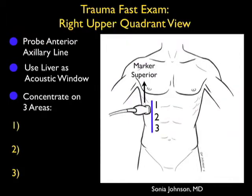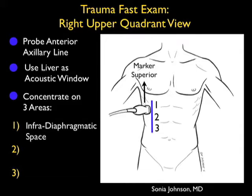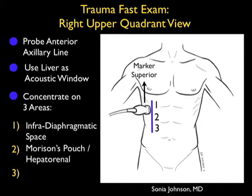Now let's take a look at a slide showing us how to perform the right upper quadrant view of the trauma fast exam. We'll want to place the probe at about the anterior axillary line, and using the liver as an acoustic window, aiming the probe down towards the bedside retroperitoneally to get a good view of these anatomical structures. It's best to have a small footprint probe that can easily sit between the ribs, giving a good view onto this area. Notice that this is a long axis view with the probe marker positioned superiorly.